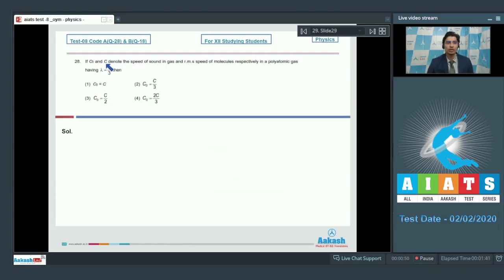Question 28 says, if C0 and C denote the speed of sound in gas and RMS speed of molecules respectively in a polyatomic gas having lambda is equal to 4 by 3 then? Dear students, herein this is the adiabatic coefficient that is Cp by Cv.